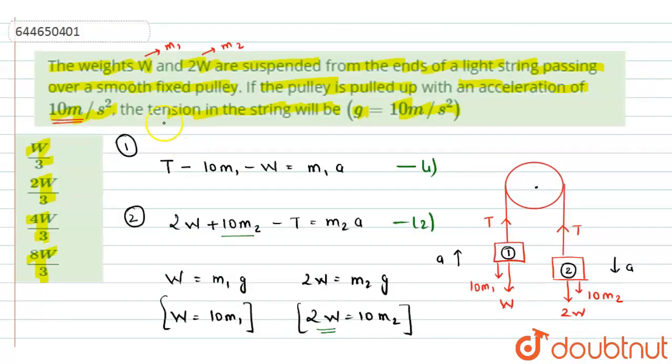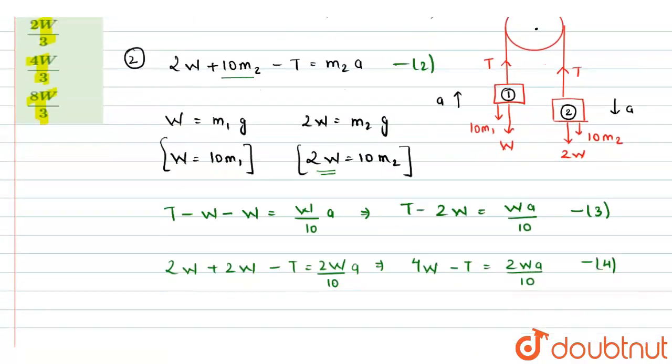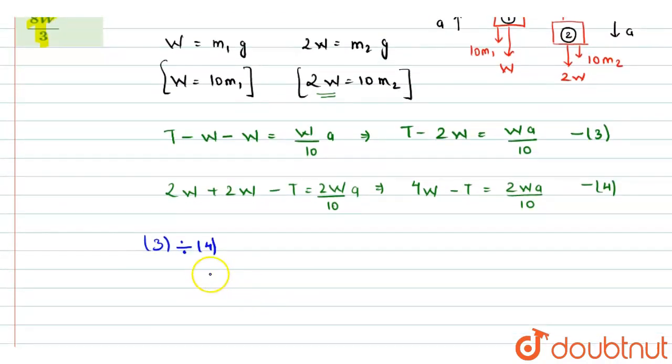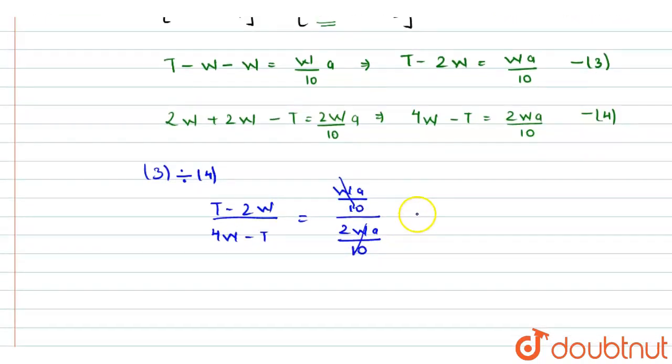Now we have to find the tension in the string. So to find the tension in the string, we just have to divide equation 3 and equation 4. So dividing equation 3 by equation 4, we will get T minus 2w divided by 4w minus T equals to, here we have w a by 10, here we have w a by 10 divided by 2w a by 10. So from here we can cancel out w a by 10 as this is the common in both equations, and we will be left with 1 by 2 on the RHS part.